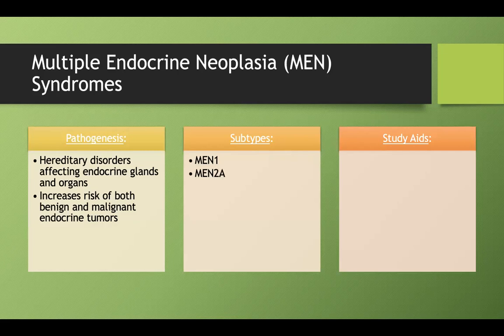There's MEN1, MEN2A, and MEN2B — three different syndromes we're going to talk about. There are several study aids I'm going to use to help you remember these, because they involve a hodgepodge of random tumors, so it's good to have some framework to make it easier to study.